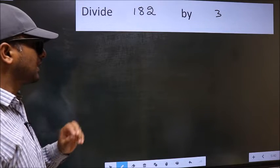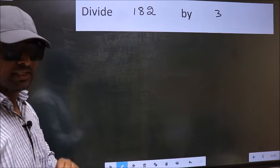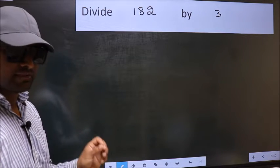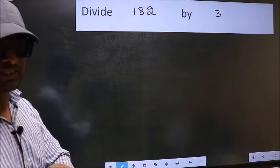Divide 182 by 3. While doing this division, many do this mistake. What is the mistake that they do? I will let you know. But before that, we should frame it in this way.